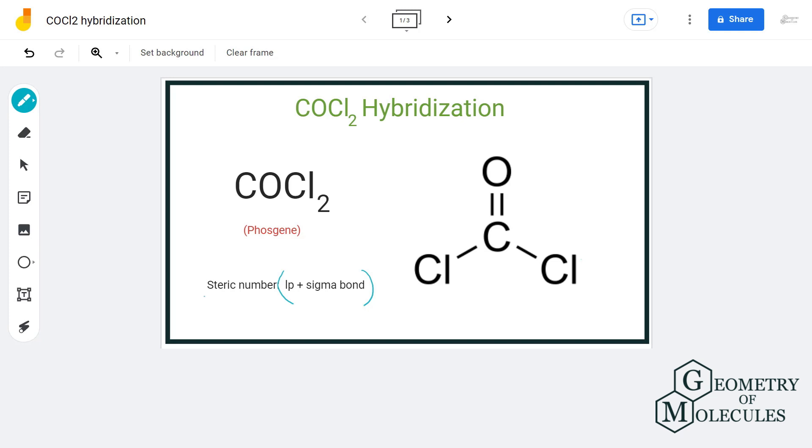Now that we have discussed what steric number is, let us have a look at Lewis structure of COCl2. We can clearly see that the central atom carbon has formed two sigma bonds with two chlorine atoms and also has a double bond with oxygen atom. And we know that double bond comprises of one sigma bond and one pi bond.